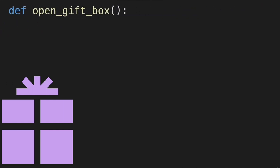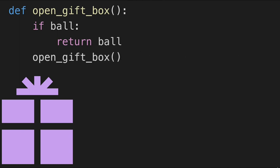So now let's look at some code. This is pseudocode — it's not code that will actually run, it's just for example. We're going to create our function, open gift box. If when we open the box it contains a ball, we will return that ball. Otherwise, it's a gift box, in which case we need to run the open gift box function. This is where the function calls itself.